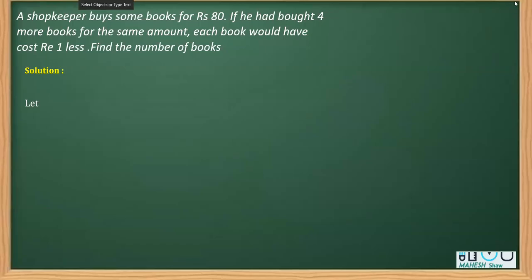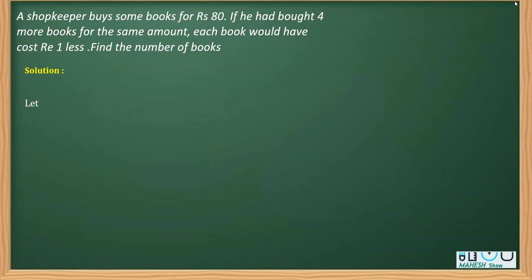One more word problems question based on quadratic equations, class 10. It says: a shopkeeper buys some books for rupees 80. If he had bought four more books for the same amount, each book would cost rupees one less. We need to find the number of books.